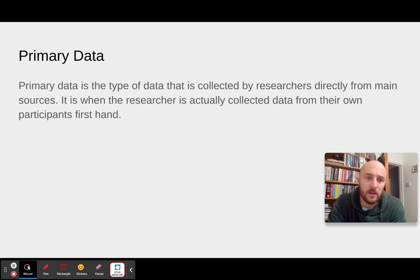Now when we talk about primary data, this is the type of data that's collected directly from the participants, right, first hand. I cannot express to you how much that terminology is actually quite key to describing primary data. So primary data is collected directly from the participants first hand. It's when the researcher is actually collecting data for their own piece of research.